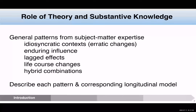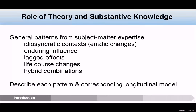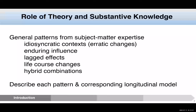I've identified some common ideas seen in different substantive areas — rough ideas of patterns of changes that might be observed from people who have studied a particular outcome for a long time. I'm labeling these as: the idiosyncratic context, which is sort of erratic changes with no systematic pattern; the enduring influence; lagged effects; life course changes; and then combinations of these. What I want to do next is describe each of these patterns and then propose a model that captures some of those ideas.